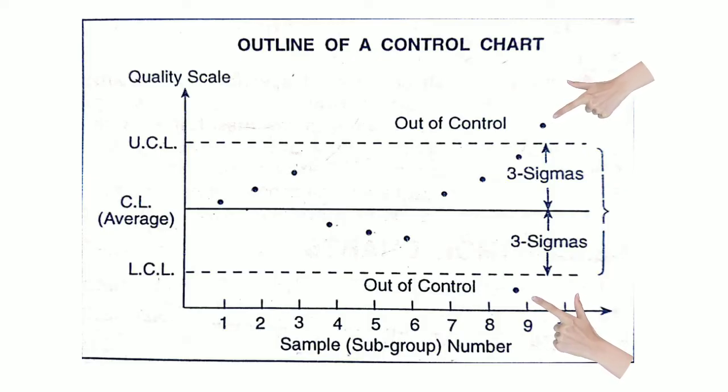Now see, if there is a chance cause, we cannot remove them. If there is a chance cause, if there is a production, then we accept them. So the control limits are like this, and the control limits are used in control charts.